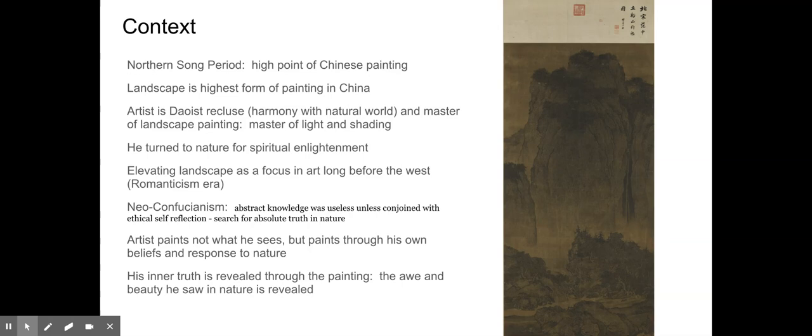He is elevating landscape as a focus in the Northern Song period, long before the West. You don't really have that in the West until the Romantic era — with the Oxbow, with Slave Ship, and so on. Really keep that in mind as a relatable art piece, especially the Oxbow, which definitely connects with this.